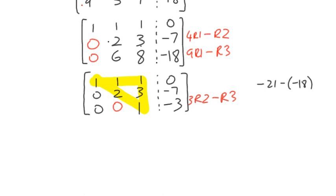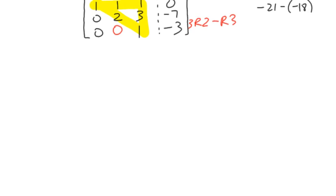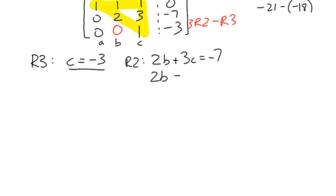Which means that I can take row by row and solve for a, b, and c. So from row three, we can state that, remember that's a, b, and c coefficients, so we can say 1c = -3, that's actually our answer. From row two we can say that 2b + 3c = -7. Substituting in the fact that c is -3, 2b - 9 = -7, we'll add 9 to both sides, take the 9 over to the other side, 2b = 2, b = 1.